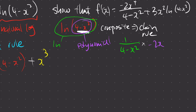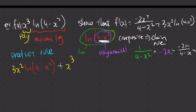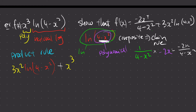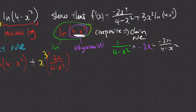So combining those two together by multiplying, it becomes negative 2x over (4 minus x squared). That means we can now substitute this in — the derivative of ln(4 minus x squared) is negative 2x over (4 minus x squared).